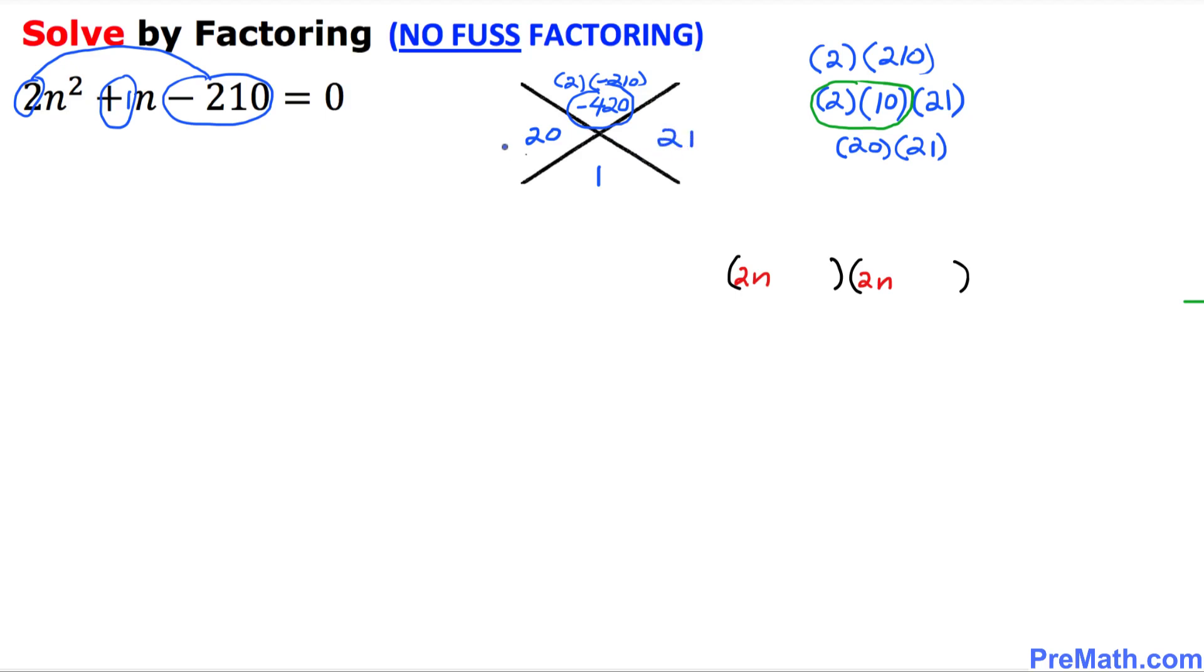Let's fix the sign right now. Since this is a positive one, that means it's going to be a positive 21 and negative 20. So that means these two factors turn out to be negative 20 and positive 21. And these numbers I am going to put down over here. So the first one is going to be negative 20, and here is going to be positive 21.